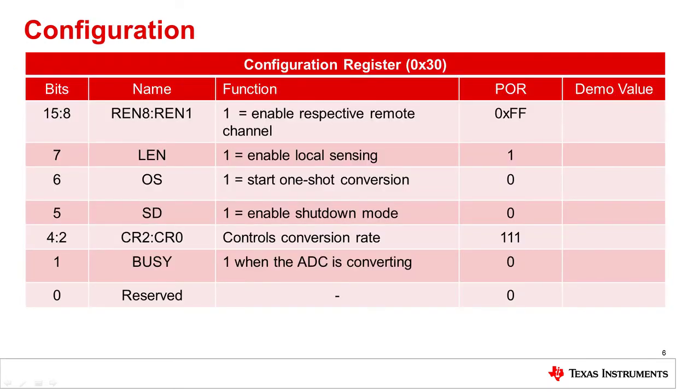The table on this page shows the breakdown of the configuration register of the TMP464 and 468, which is located at register address 0x30 for both devices. The upper byte enables or disables the remote channels. Note that bits 15 to 12 only function on the TMP468, which has the extra four channels.